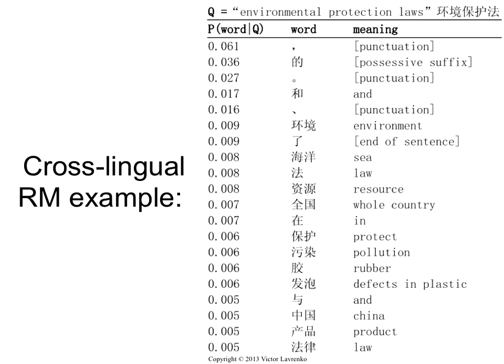If you do this for Chinese, here's the kind of result you'd get. The English seed is 'environmental protection laws' — that's the English query. This is the kind of distribution you would get over Chinese, based on a parallel corpus and counting. These terms are not translations of any single word in the query; they are terms associated with the entire query. It's basically synonymy, but here you're taking a set of terms and asking which terms are synonymous with that entire set of terms.